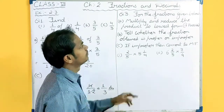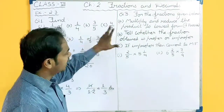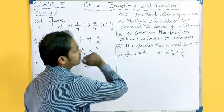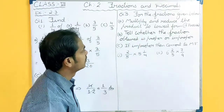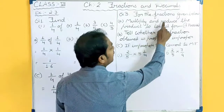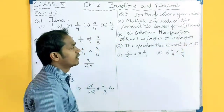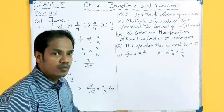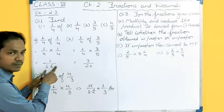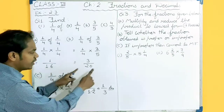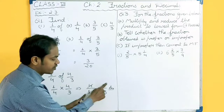Now Question 3. For the fractions given below, these three conditions you have to fulfill. First, you will multiply your numbers and reduce the product to its lowest form if possible. Then you will reduce if it is possible. In some cases it was not possible to reduce, but here it was possible to reduce, so I have done the reduction.